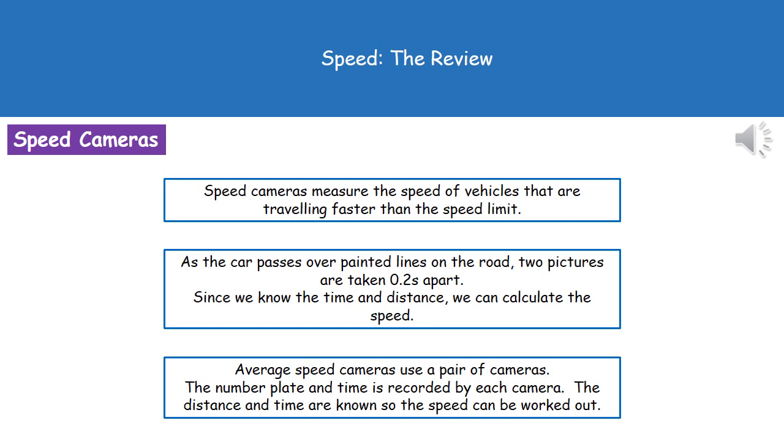Our first one is that standard speed camera you've probably seen on the road. You've got your speed camera on the side of the road, and on the road itself there are a series of white lines painted on the surface.